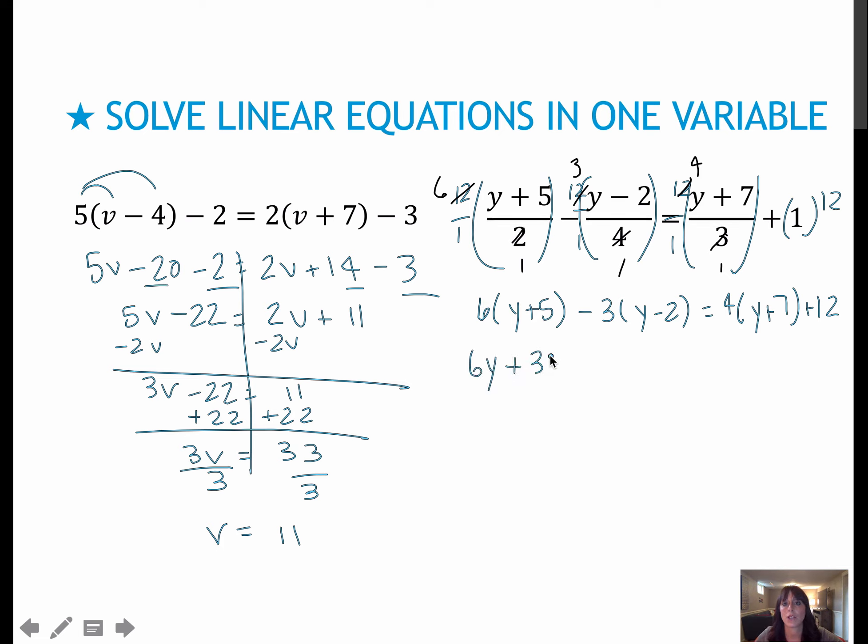So now when I distribute the 6, that gives me 6y plus 30 minus 3y plus 6. Be careful on this one. This is one that we really watch out for. This is a negative here and also a negative here. So a negative times a negative gave me the positive 6. Again, if you want to, go ahead and keep flip change to make that a negative 3. And then a negative 3 times a negative 2 gives me positive 6. Distribute over here to get 4y plus 28 and then of course my plus 12. Before I do anything to each side, I'm just going to clean up each side. So 6y minus 3y gives me 3y. 30 plus 6 gives me 36. On the right side, I have 4y plus 40.